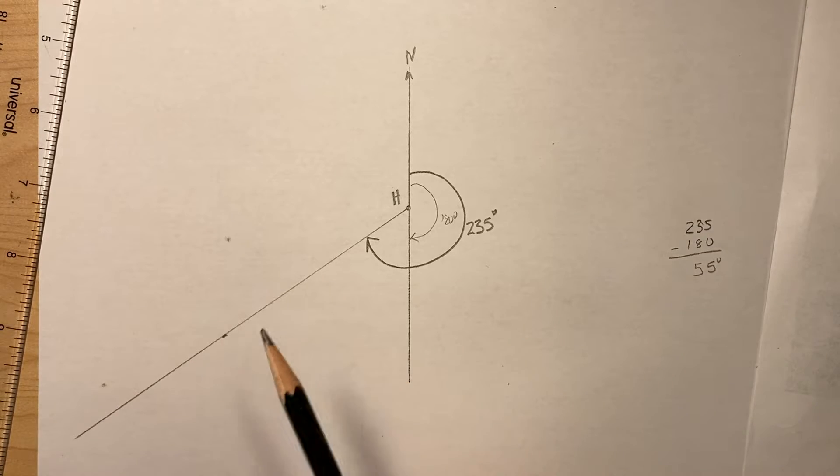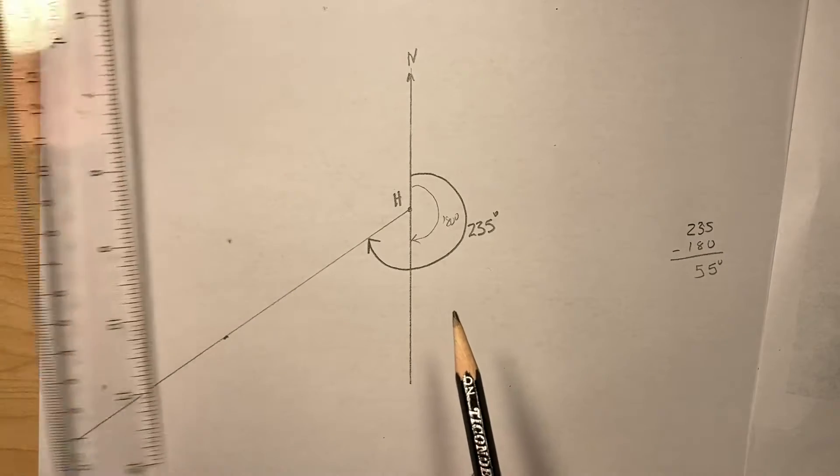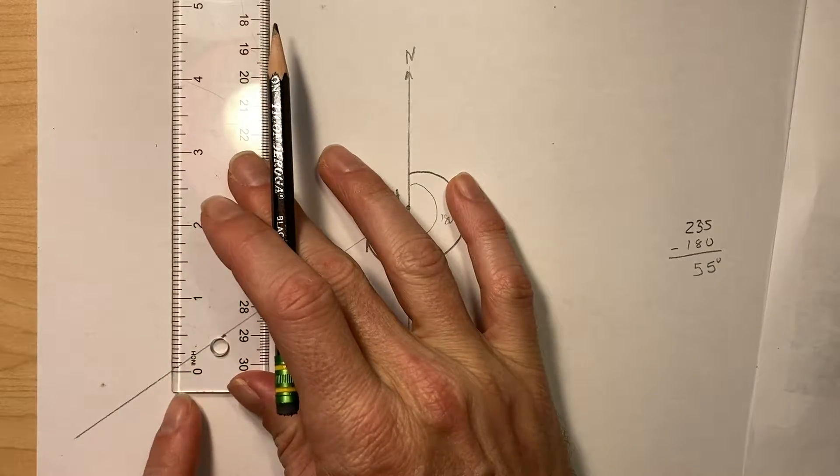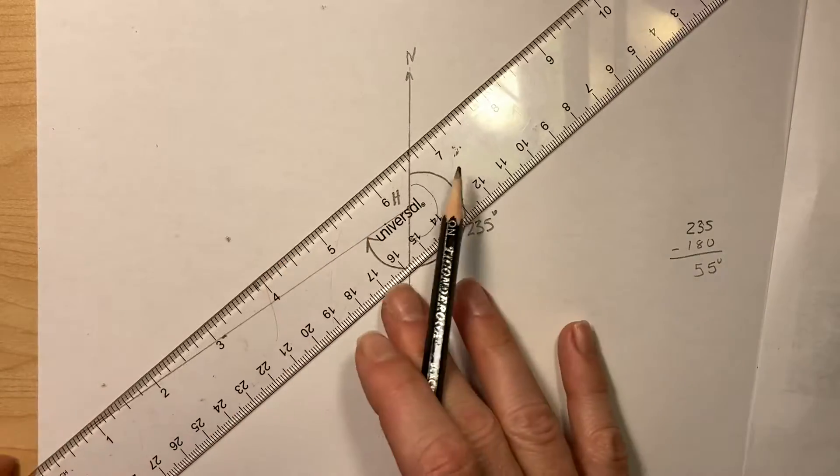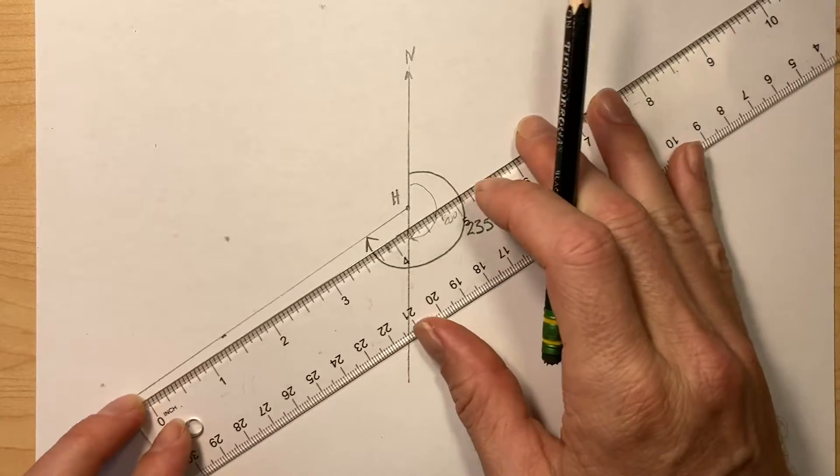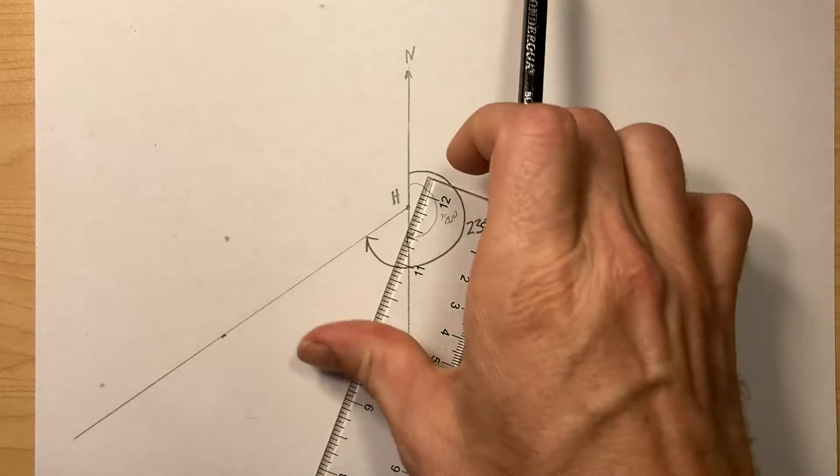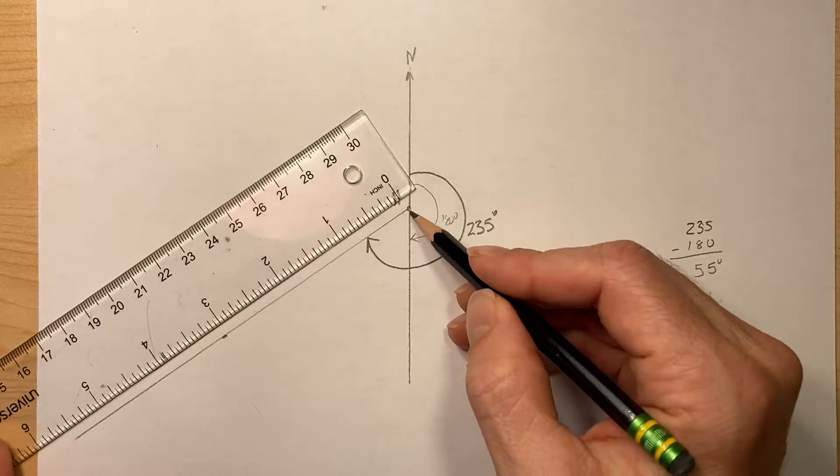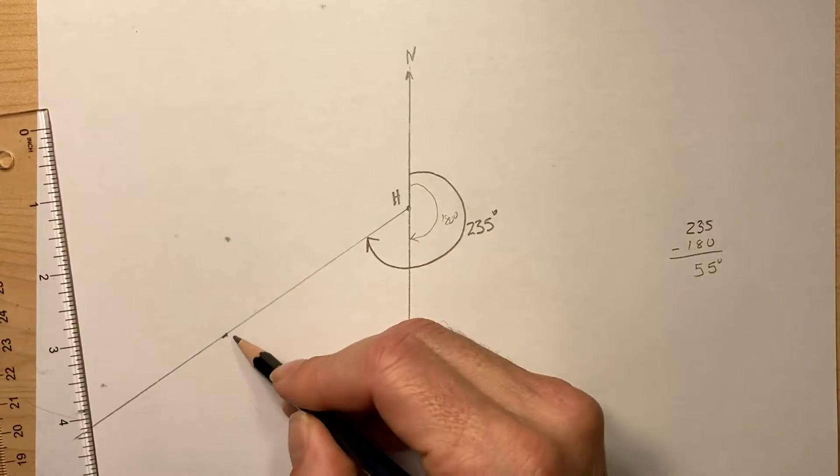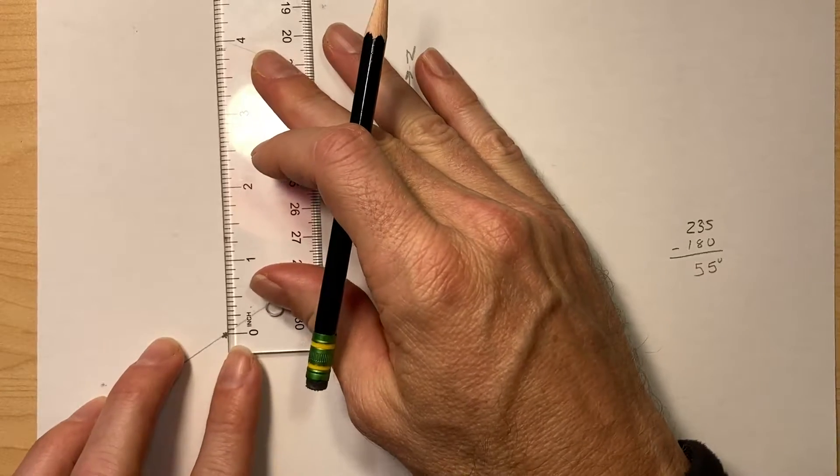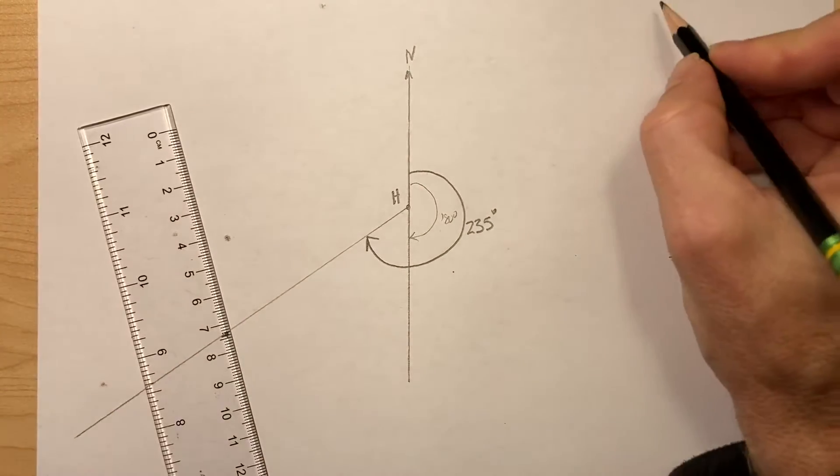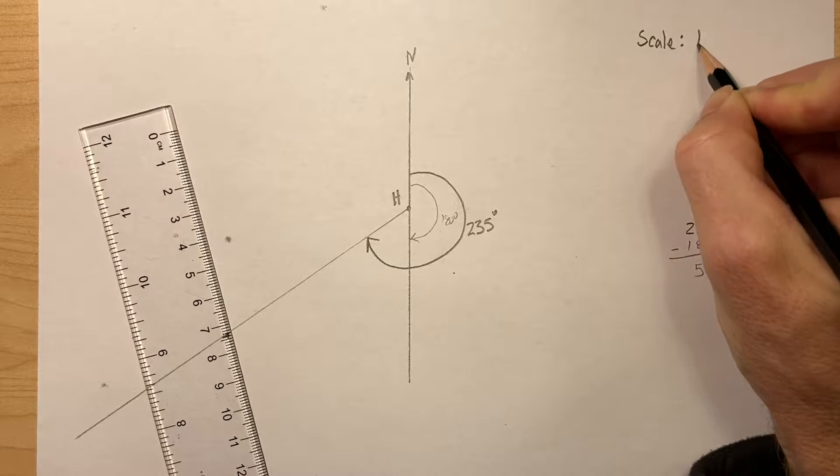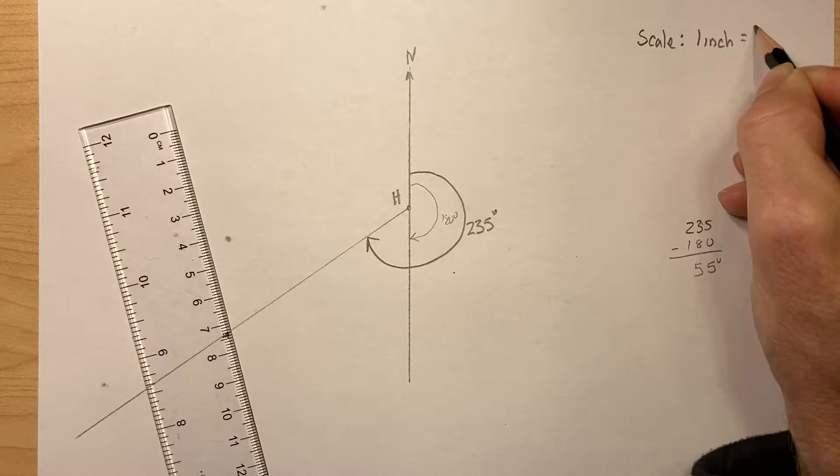So this angle is 235. Now it's going to go three miles, so the ship's going to go three miles, then four and a half miles north. So I just have to be careful about my scale here. Let's go... I could say one inch is a mile. So if I do that, that would be there. Did I leave myself enough room? I think I did. So let's do that. Let's say scale: one inch equals one mile.